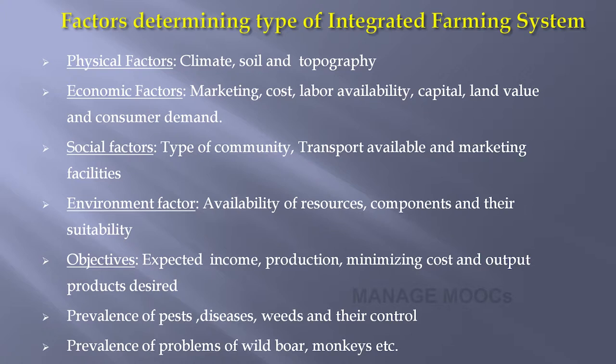As per the objective, the expected income from the integrated farming system — what the farmer is expecting — needs to be seen, along with minimizing cost and desired output product. All these factors decide the type of integrated farming system for different areas. Prevalence of pests, diseases, weeds, and their control are also crucial factors in choosing the kind of enterprise for a particular area.